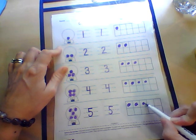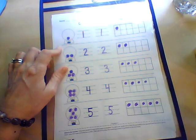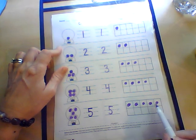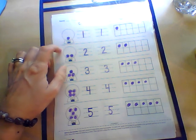Then we can fill out our five on our 10 frame. This is called a 10 frame because there are five on the top and five on the bottom, and five and five make 10.